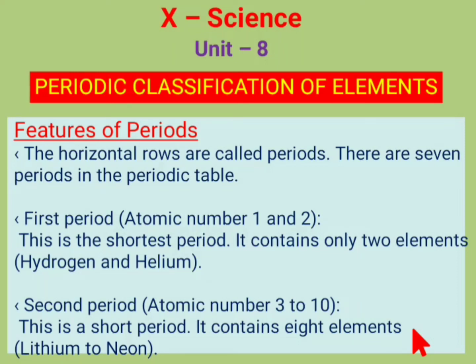Good morning students. Welcome back to the chemistry lesson. Now we will move on to the next lesson: periodic classification of elements. There are totally 118 elements, and we need to understand how to arrange them in a particular order.